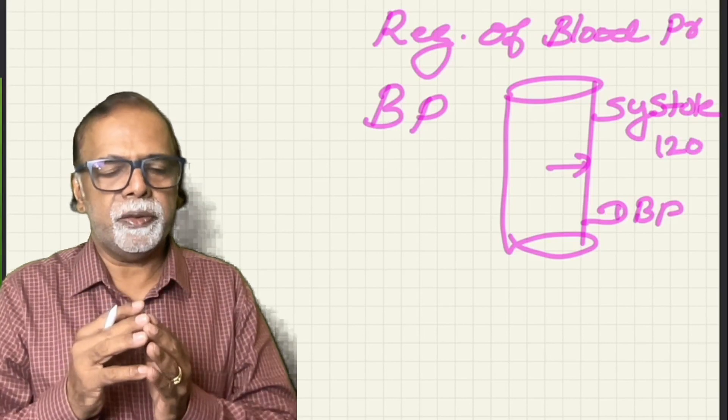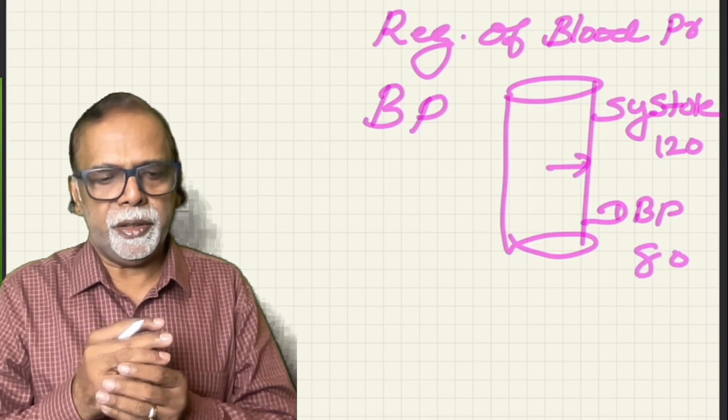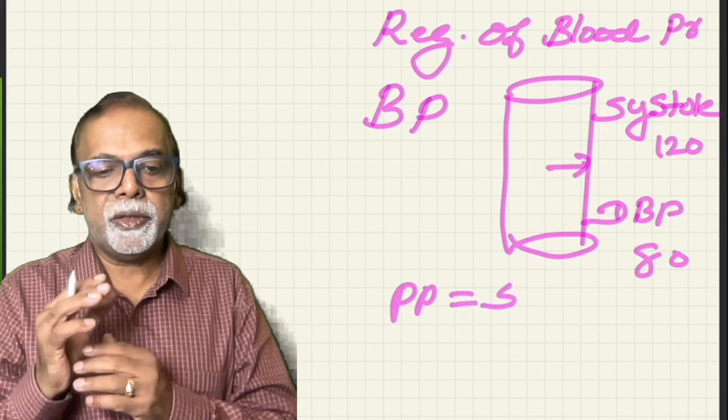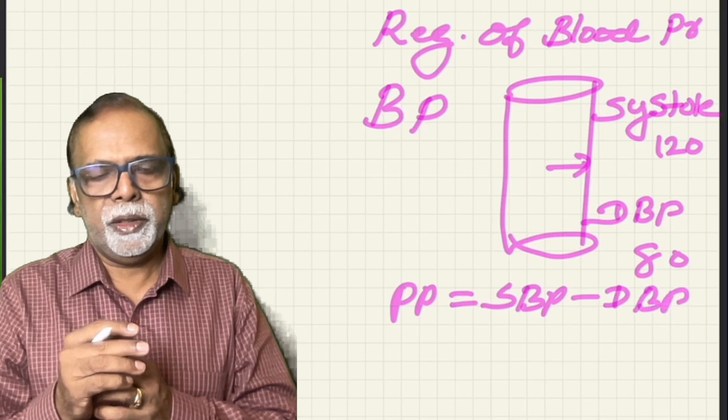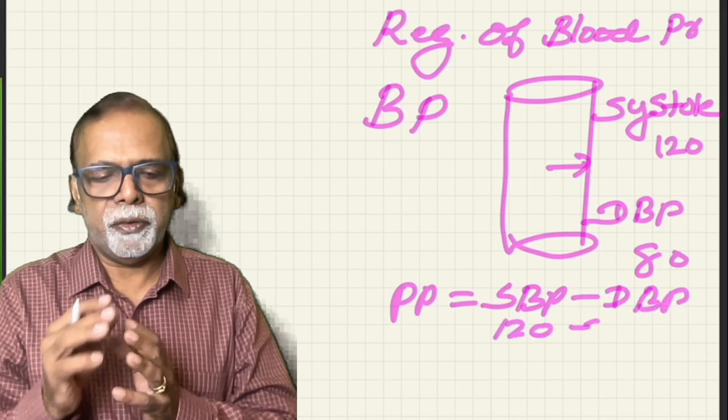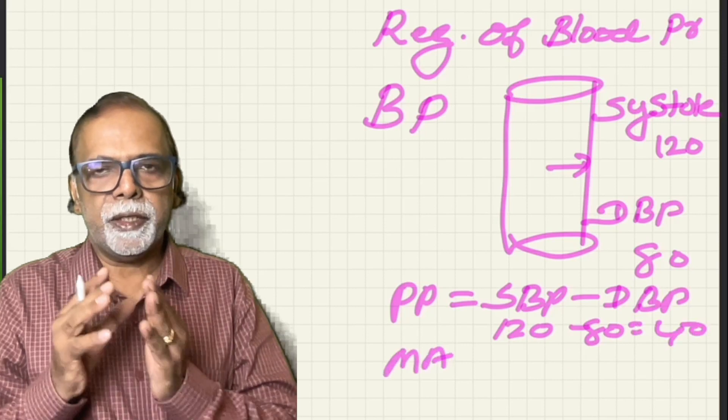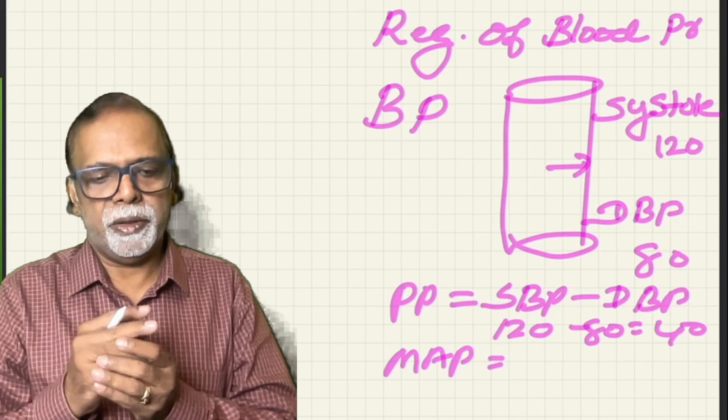Diastolic BP is the minimum pressure exerted in the arteries during diastole and normally it is 80. Pulse pressure is the difference between systolic pressure and diastolic pressure. It is 120 minus 80, which equals 40. Mean arterial pressure is the average pressure existing in the blood vessels.